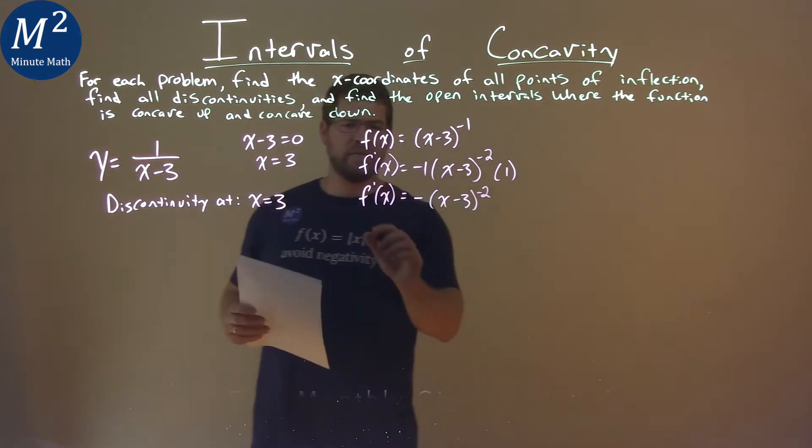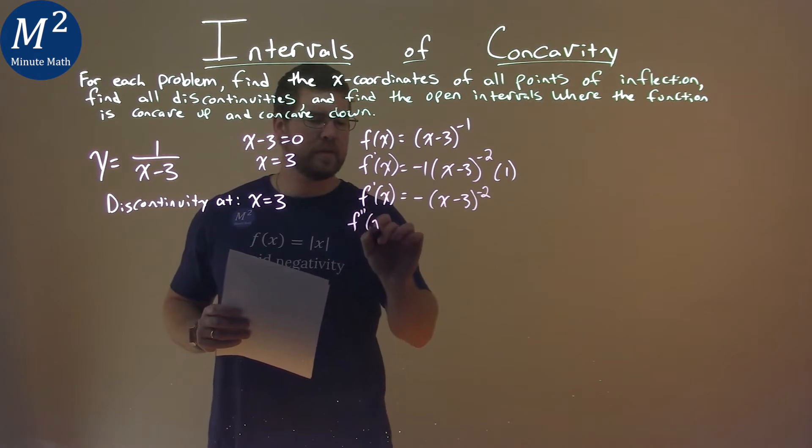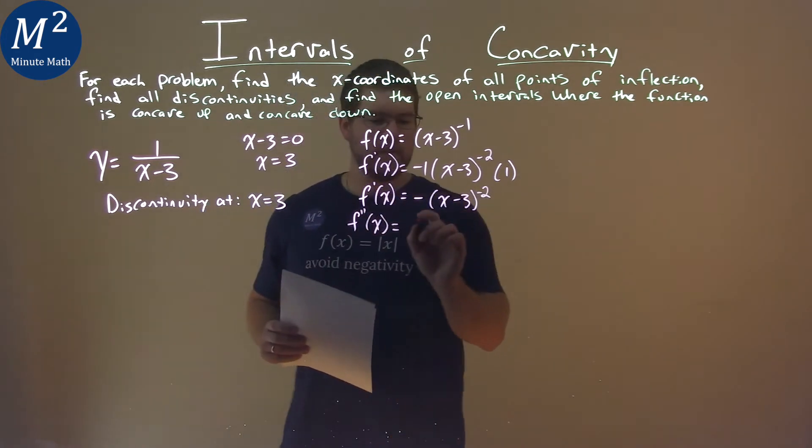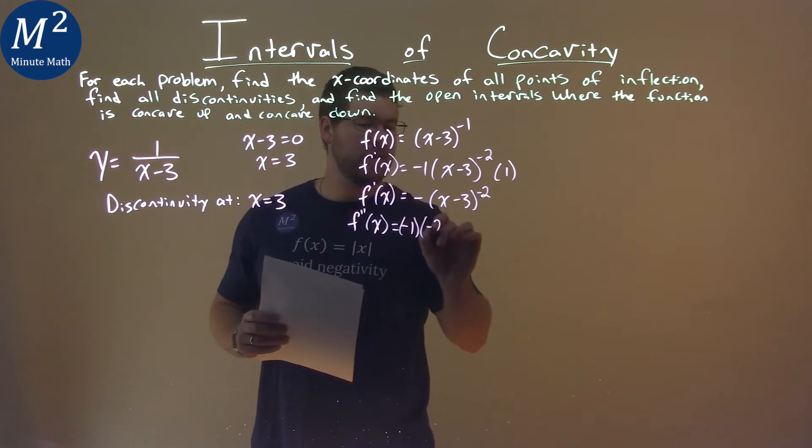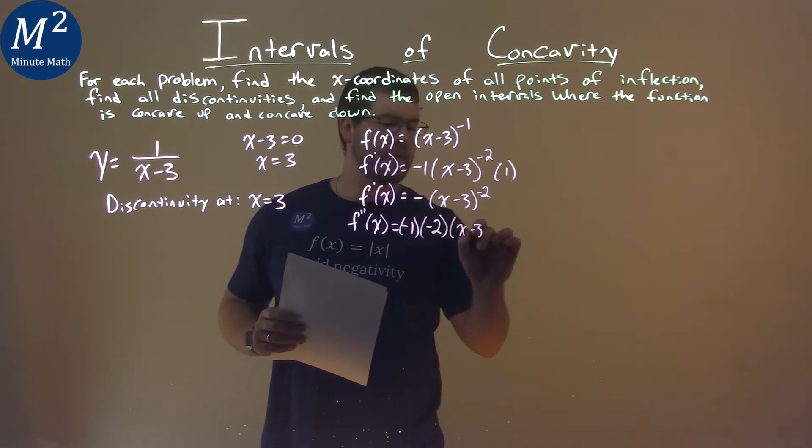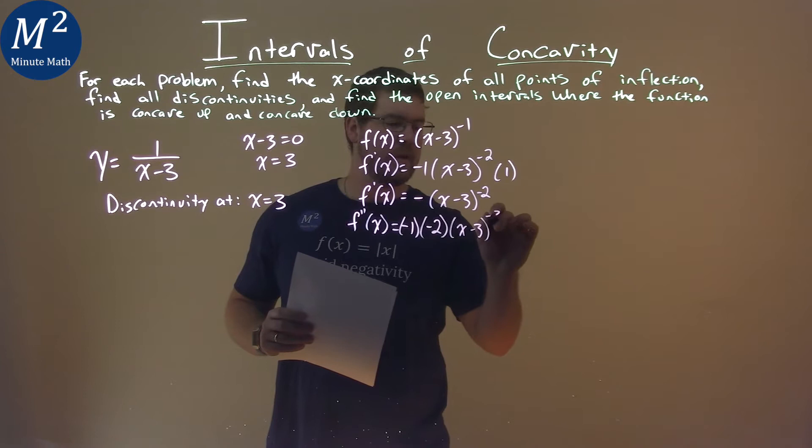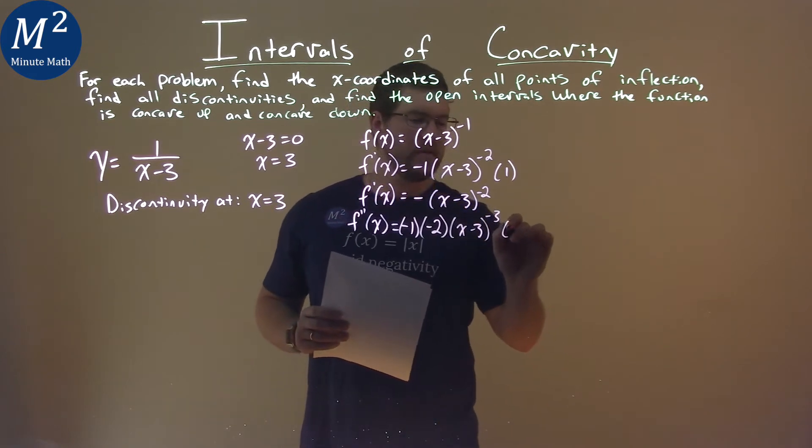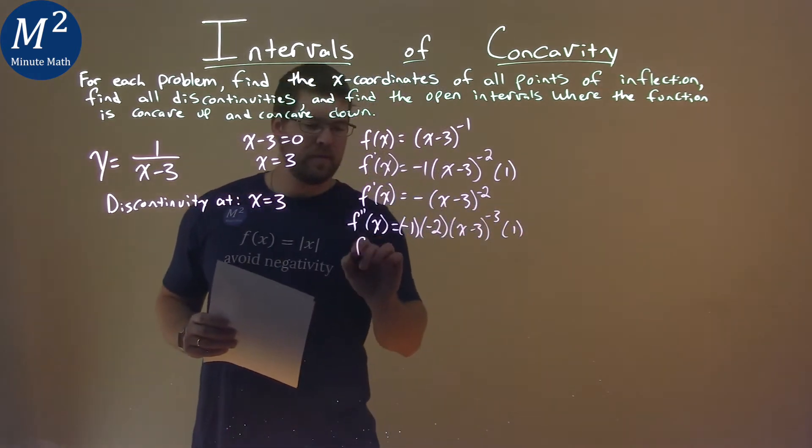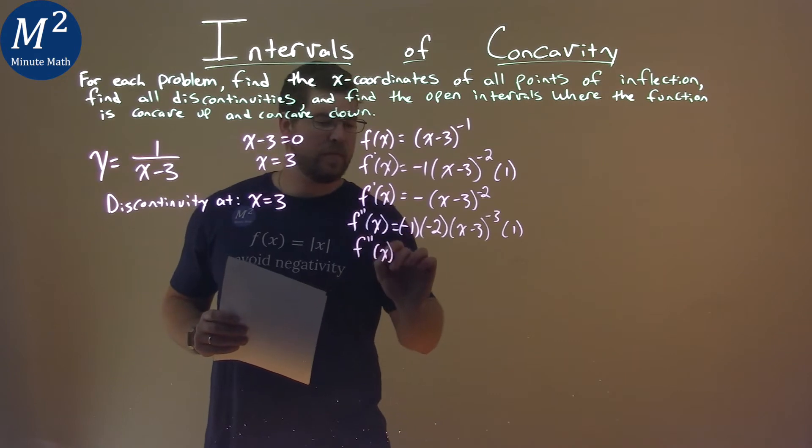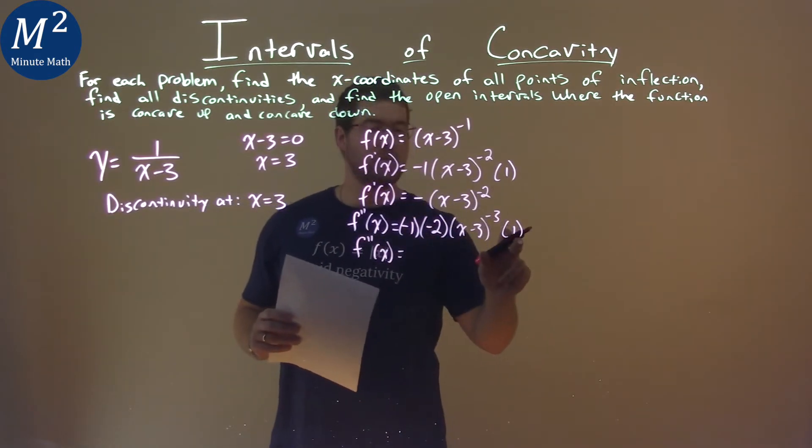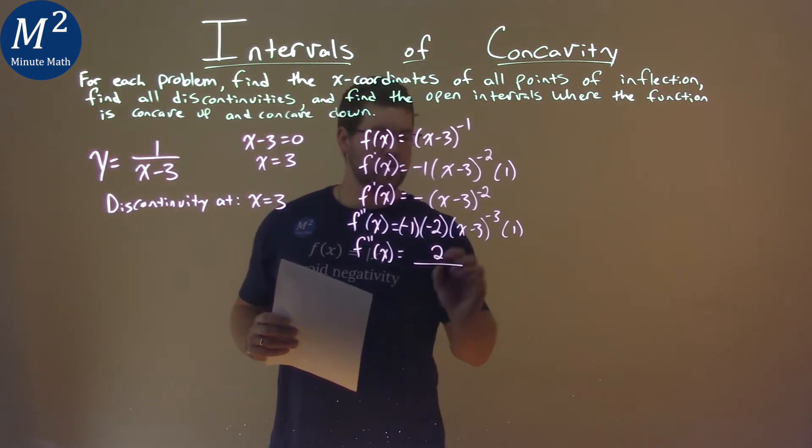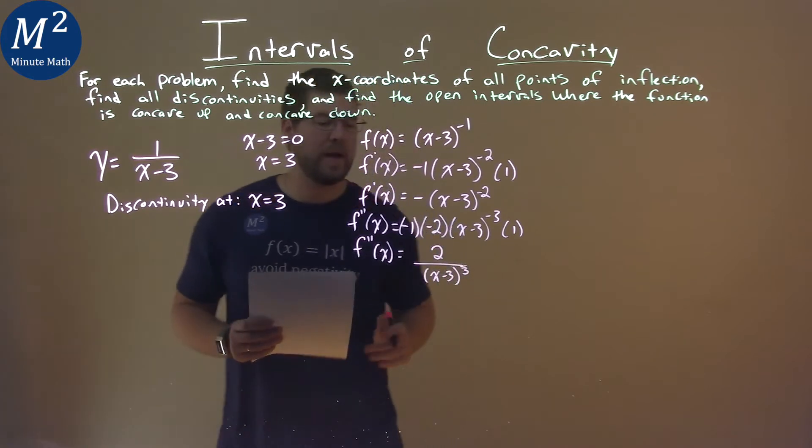Well, now let's find the second derivative. f double prime of x equals, we have a negative 1, power comes down, negative 2, x minus 3, subtract the exponent by 1, negative 3, derivative inside is just 1. Simplifying this out, f double prime of x: negative 1 times negative 2 is positive 2, times 1 is 2 in the numerator, and in the denominator we have x minus 3 to the positive 3rd power.